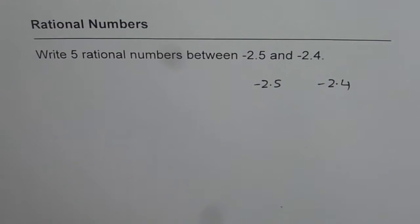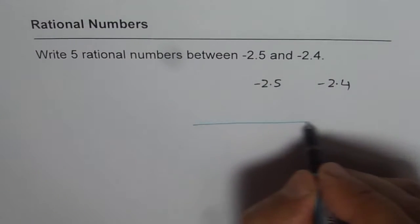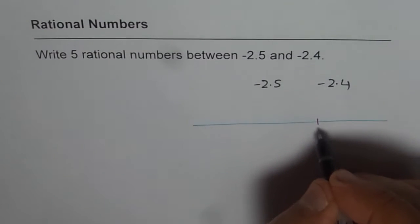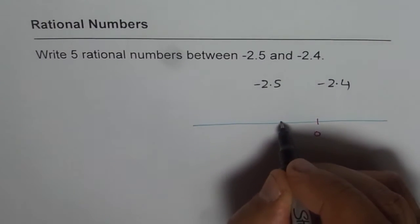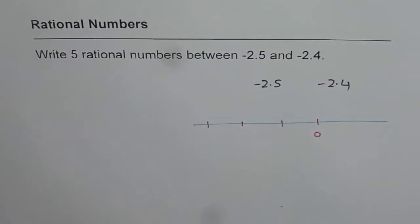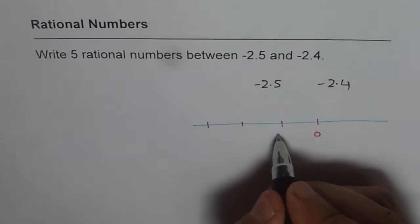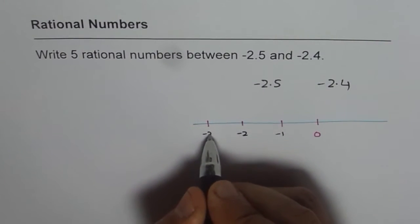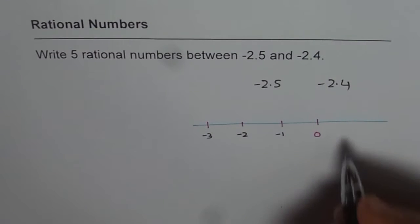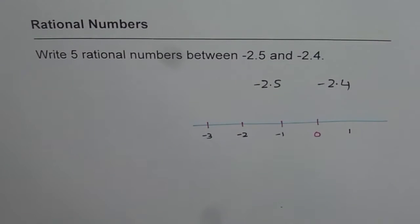If you see on a number line, let me represent it on a number line. Let's say that is the number line. Here we have 0 and let's say this is 1, this is 2 and this is 3. Let's say this is minus 1, minus 2, minus 3. Numbers to the left of 0 are negative. On the right will be positive.